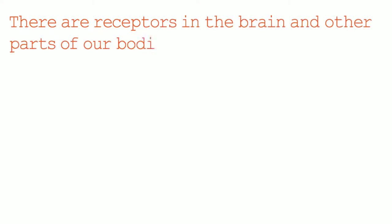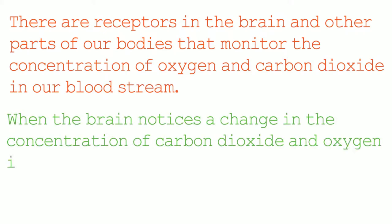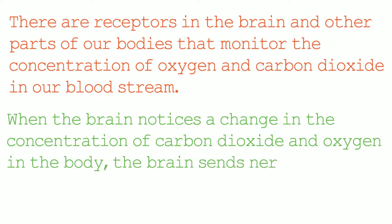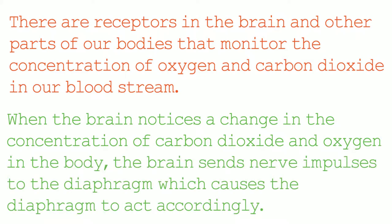The human body has receptors in the brain and other parts of our bodies that monitor the concentration of oxygen and carbon dioxide in our bloodstream. When the brain notices a change in the concentration of carbon dioxide and oxygen in the bloodstream, it sends nerve impulses to the diaphragm which causes the diaphragm to act accordingly.